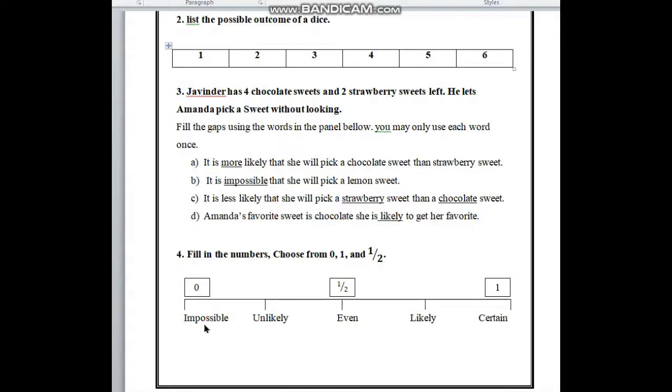The first one is impossible. We know that when an event cannot happen, it is impossible, and for impossible there is a 0% chance. So in the first box we have to write 0.